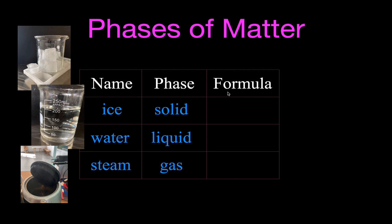I like to get my students to understand what is really the difference between ice, water, and steam. What's the chemical formula for water? It's H2O. What's the chemical formula for ice? That's also H2O. And for steam — especially with just boiling water — it's also H2O. So what is the difference between a solid, a liquid, and a gas?